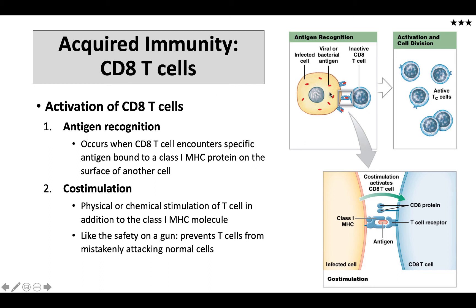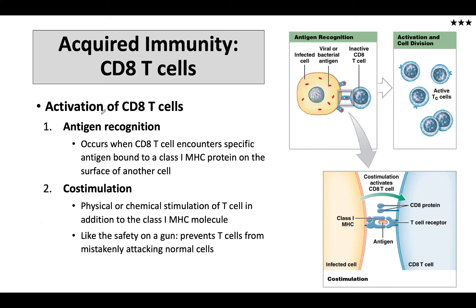CD8 cells, as we've already discussed in terms of general T cell activation, requires a two-step process in order to be activated. We have the antigen recognition process, which is the binding of this antigen shown here. That antigen may be a bacteria or a viral antigen. This particular cell is the infected cell, so let's assume it's a virally infected cell, because viruses often get into these cells.